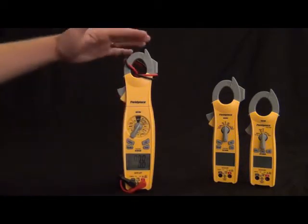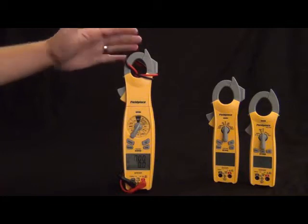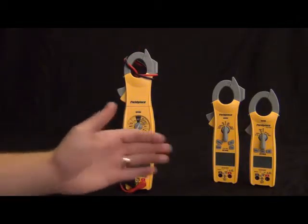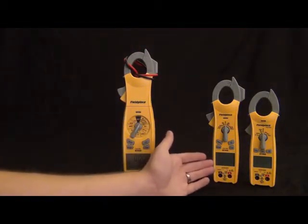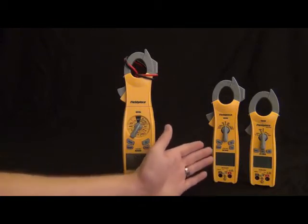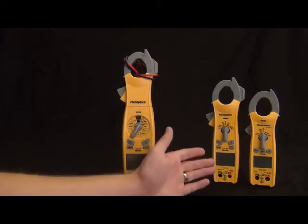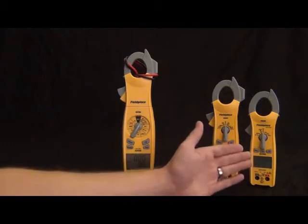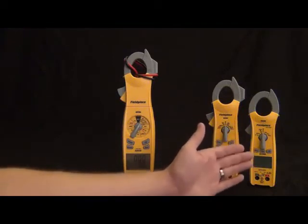First we have the SC600 series. This is the fully loaded, feature rich line. Then we have the SC400 series, which is all the essential features in a mid-size package. Then we got the SC200 series, which is all the everyday features in a nice compact package.